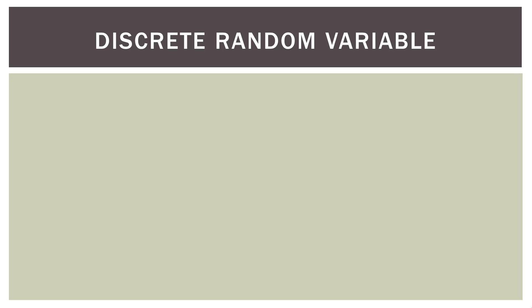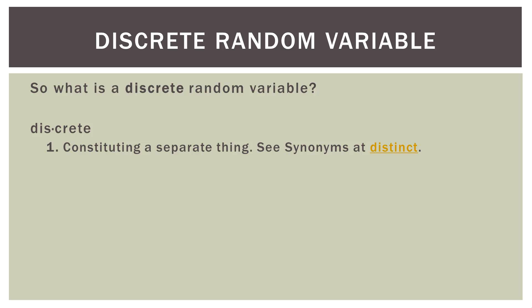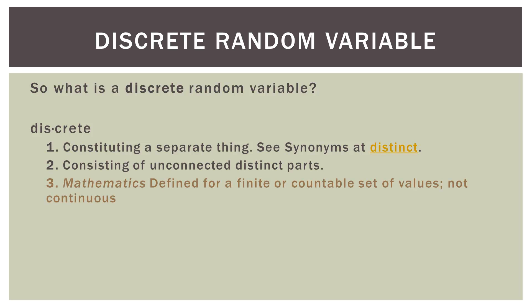This brings us to the idea of what a discrete random variable actually is. I looked up the definition for discrete, and it's a good one for relating to the mathematical concept. The first definition is: constituting a separate thing, or a distinct thing. Think about our coin flip — is the heads outcome and the tails outcome separate? Absolutely. Are they distinct? Absolutely.